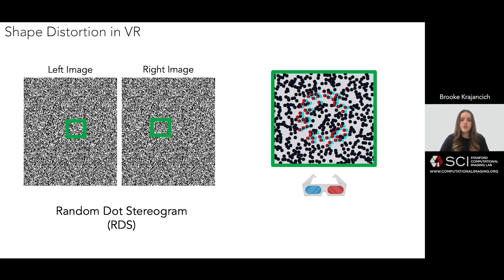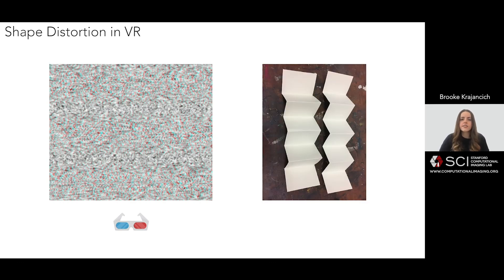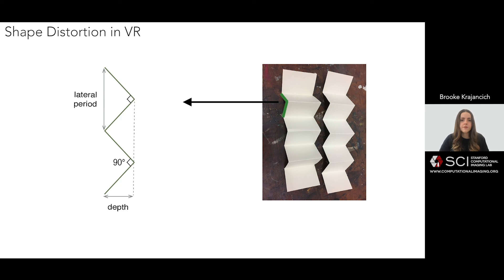We used such a pattern to render a triangle wave, demonstrated here in anaglyph. But if you don't have a pair of glasses handy, it kind of looks like the accordion folds that you can make in a piece of paper. Importantly, we rendered this pattern such that the amplitude in depth is half the period laterally of the peaks, as illustrated in this side view schematic.